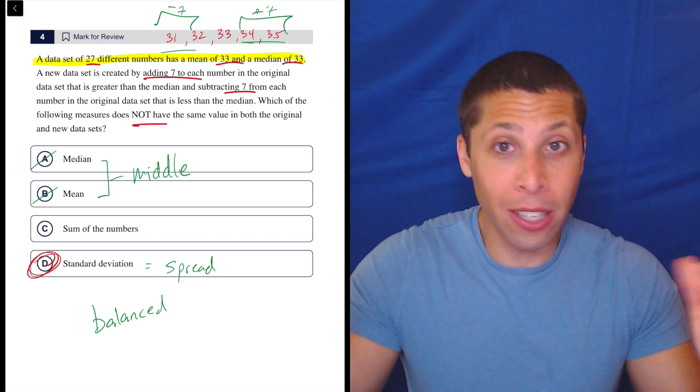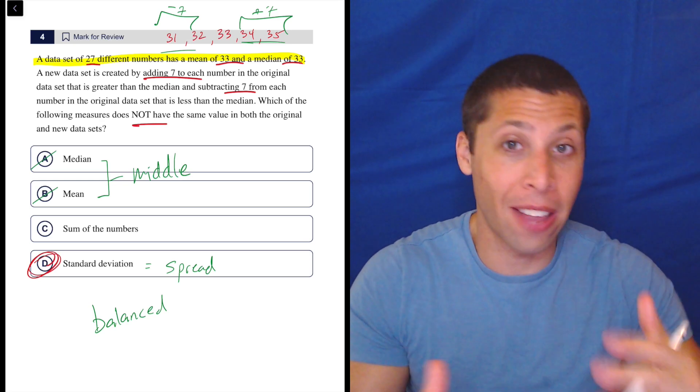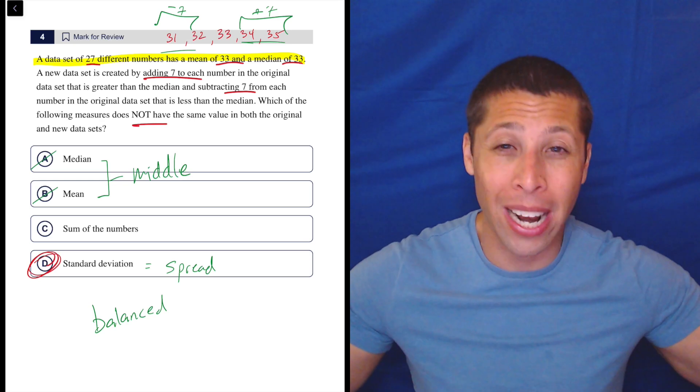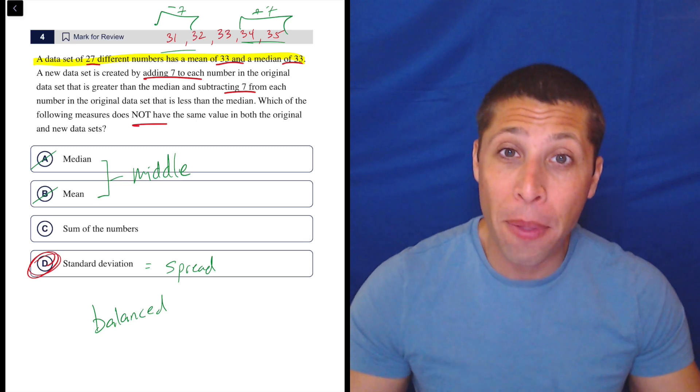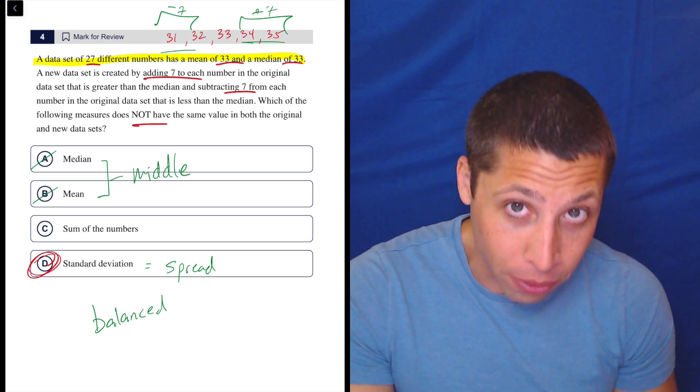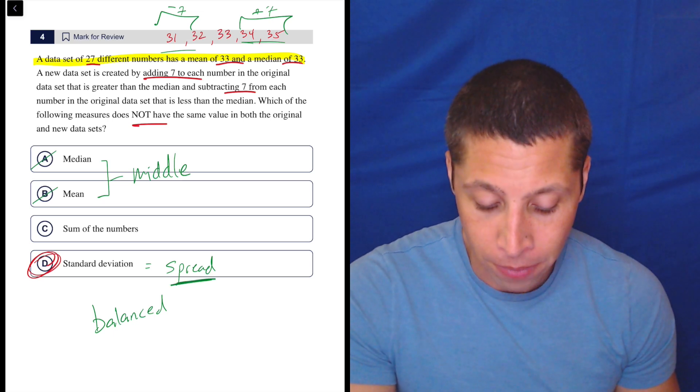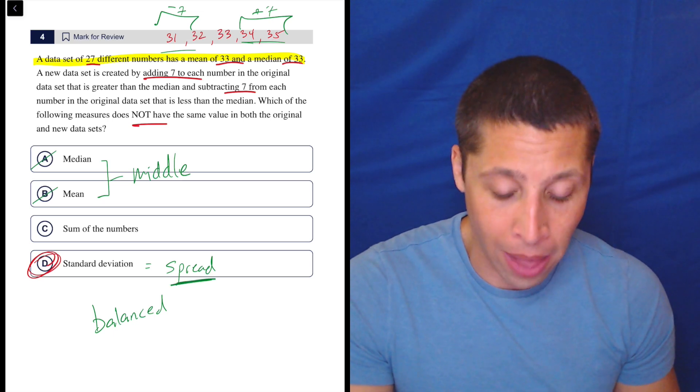Whatever, you know, if I had a 20, now that 20 is going to be a 13. If I had a 40, now that 40 is a 47. The data is getting spread out. It's getting further and further from the middle. So that's more likely to be different based on just the most basic definition of the word standard deviation. So you might pick D just for that.